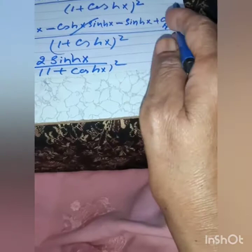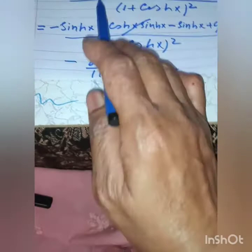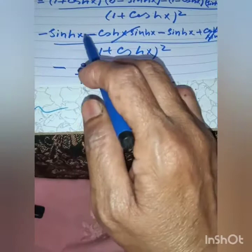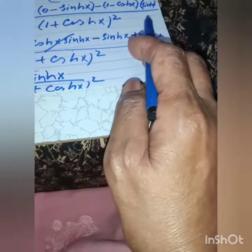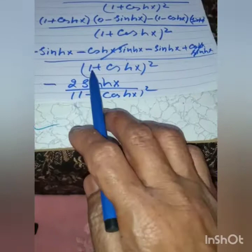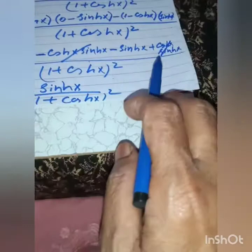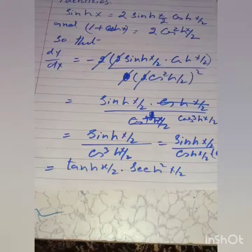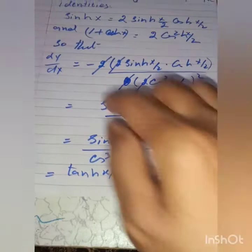Expanding the numerator: −sinh(x) − cosh(x)·sinh(x) − sinh(x) + cosh(x)·sinh(x). The second and fourth terms cancel, leaving −2·sinh(x), so dy/dx = −2·sinh(x)/(1 + cosh x)².